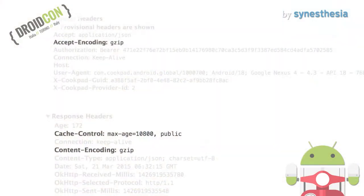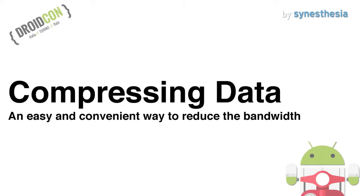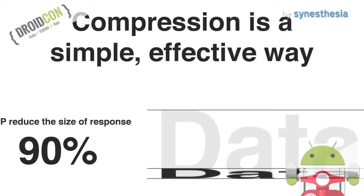In the beginning, we'll examine HTTP headers. Let's focus on these headers. First, compressing data. Compression is a simple, effective way to save bandwidth and speed up your service. Enabling GZIP compression can reduce the size of the response by up to 90%.